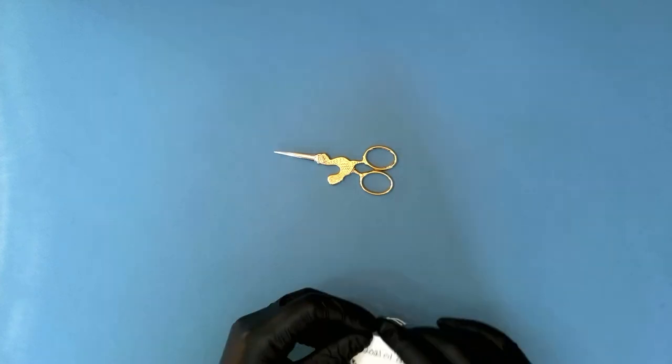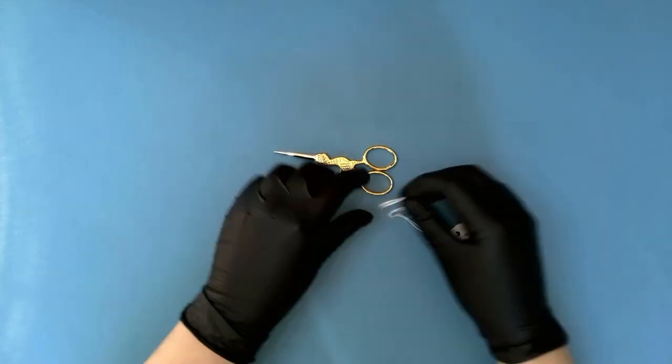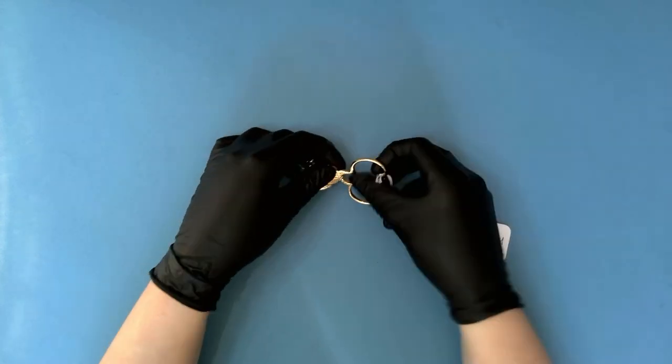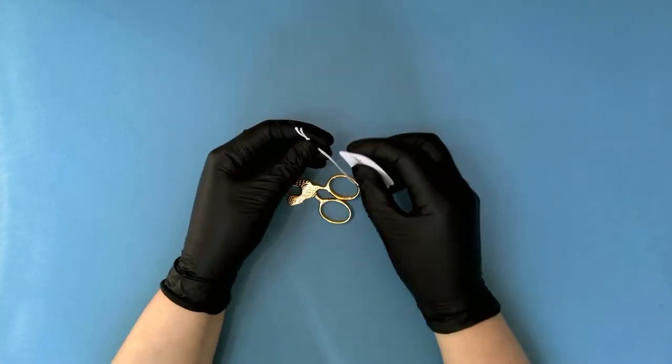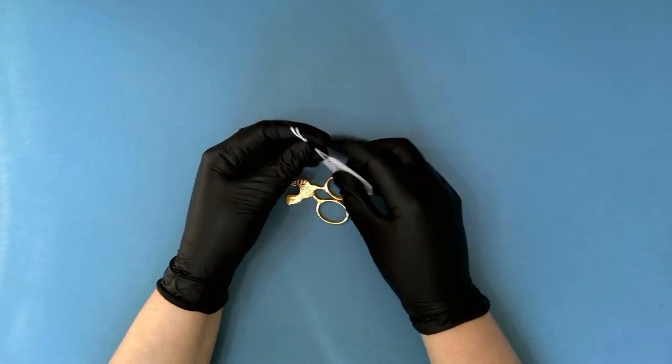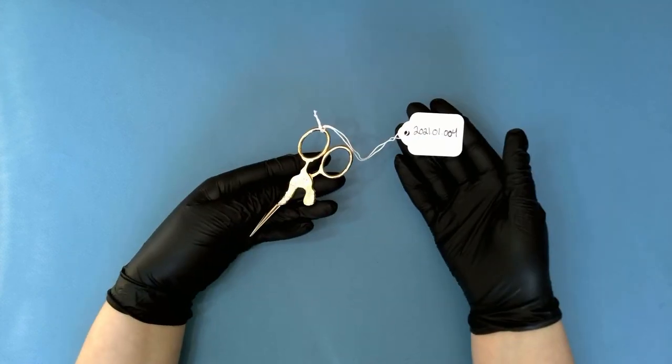Again, I'm applying the label on a sturdy area of the embroidery scissors around the hole there and I'm just going to loop it through. Don't even have to tie it. Just loop it. There you go. Perfect. Easy peasy.